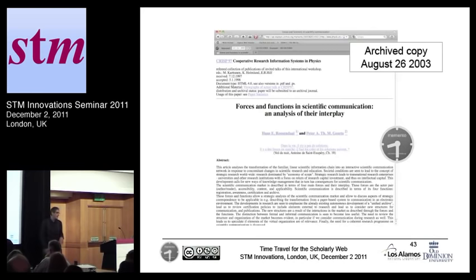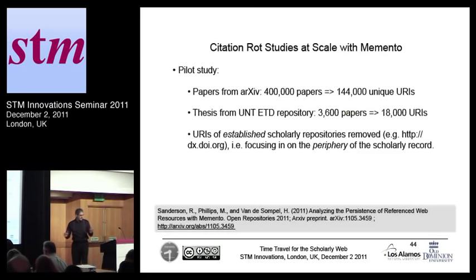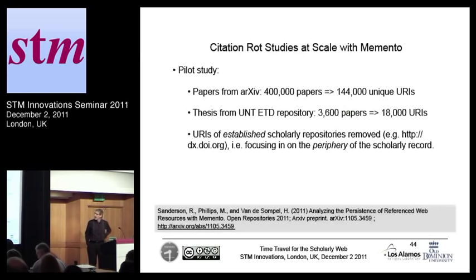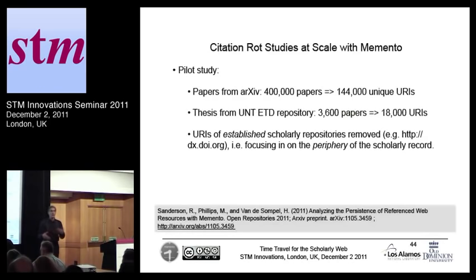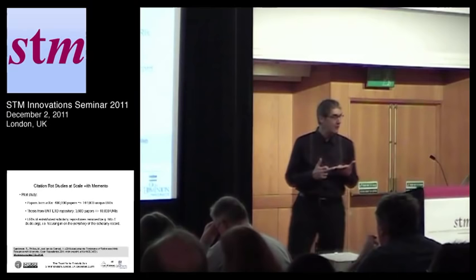Now this is anecdotal, of course — I just showed you a little paper of mine and citations therein. We did a study of this at large scale. We took all the papers from the physics archive and some papers from an institutional repository and extracted all the cited URIs, ending up with about 150,000 URIs. For these we asked: do the URIs still exist? Do we have archived versions thereof? And do the archived versions fall temporally close to the publication date of the citing paper?